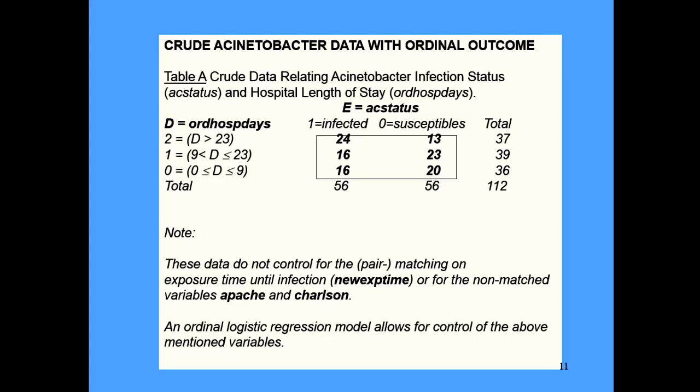The exposure variable was whether a person was resistant or susceptible to this bacteria, called AC status. The outcome is ordinal hospital length of stay in three categories. There was a matching variable - susceptibles were matched to resistant persons on how long they were in the hospital prior to getting infection, within 5% of the number of days.